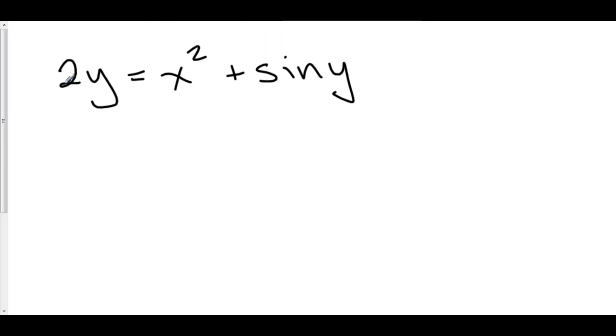So here we have 2 times stuff. The derivative of 2 times stuff is 2 times the derivative of stuff, and the derivative of y is dy/dx.